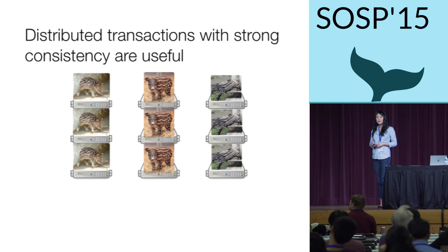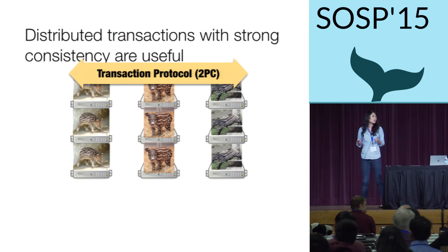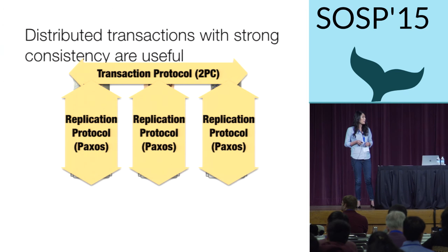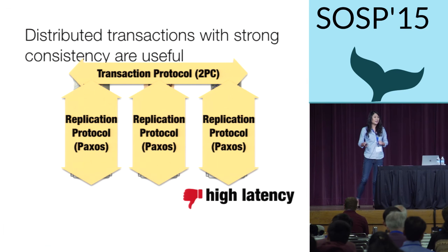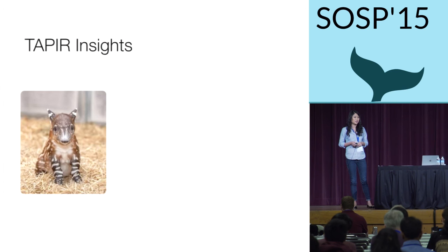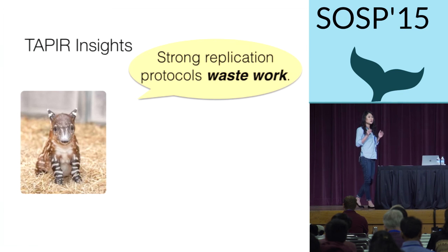Unfortunately, distributed transactions end up being quite expensive. On every transaction, the storage system has to coordinate across every partition participating in the transaction using a protocol like two-phase commit. Then the storage system has to coordinate again within each partition using a replication protocol like Paxos. All of this extra distributed coordination increases the latency and decreases the throughput. In our project TAPIR, we focused on how to reduce the amount of coordination required for distributed transactions. Our key insight is that existing distributed storage systems waste work by combining a transaction protocol and a replication protocol that both have strong consistency guarantees.